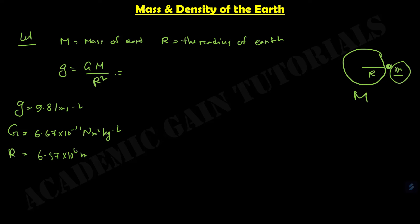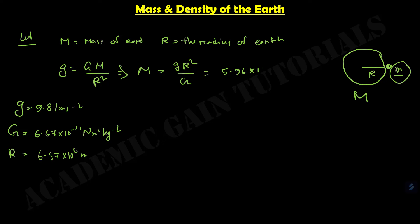If I put all these values into this equation, we can write capital M equals g R squared divided by G. So putting in small g, R, and capital G, then I will get the mass of our Earth. The mass of our Earth is M equals 5.96 into 10 to the power 24 kg, or we can write this as 6 into 10 to the power 24 kg.